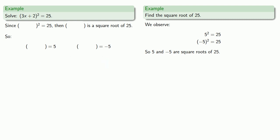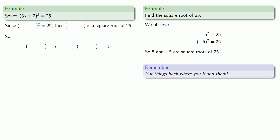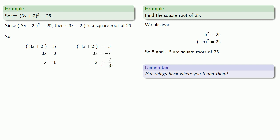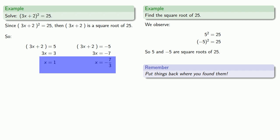At this point, we apply the rule: put things back where you found them. Originally the parentheses held 3x plus 2, so we put that back in every set of parentheses. Now we have two equations to solve. Solving the first equation gives x equals 1, and solving the second equation gives x equals negative 7 thirds. So the original equation has two solutions: x equals 1 and x equals negative 7 thirds.